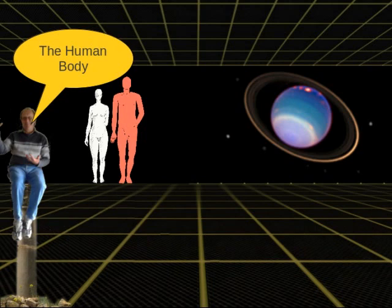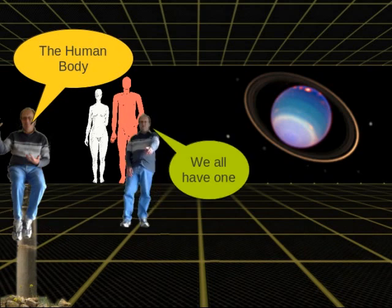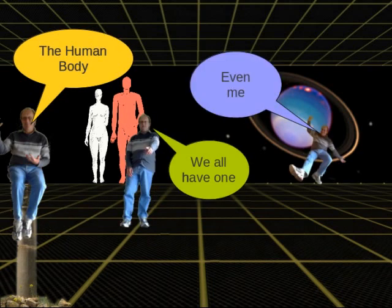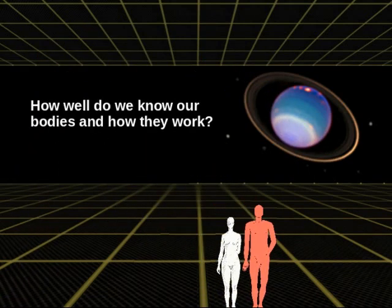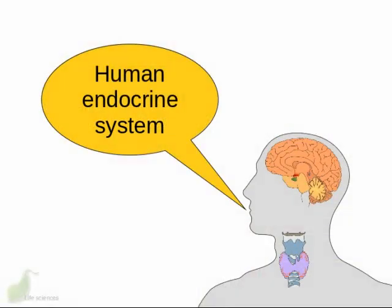The human body — we all have one, even me, for the time being anyway. But how well do we know our bodies and how they work? Perhaps not as well as we might. The human endocrine system is an exciting part of the life sciences curriculum because it's all about us, our bodies, and how they work.